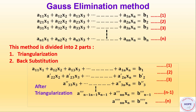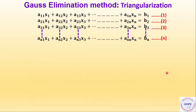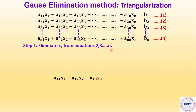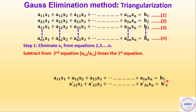Let's see how to do the triangularization. Step 1 is to eliminate x1 from equation 2 onwards, that is from equation 2 to n. So the first equation will remain as such. To eliminate x1 from equation 2, we subtract from equation 2 the quantity a21 divided by a11 times the first equation. If we do that, we get an equation like this with no x1.